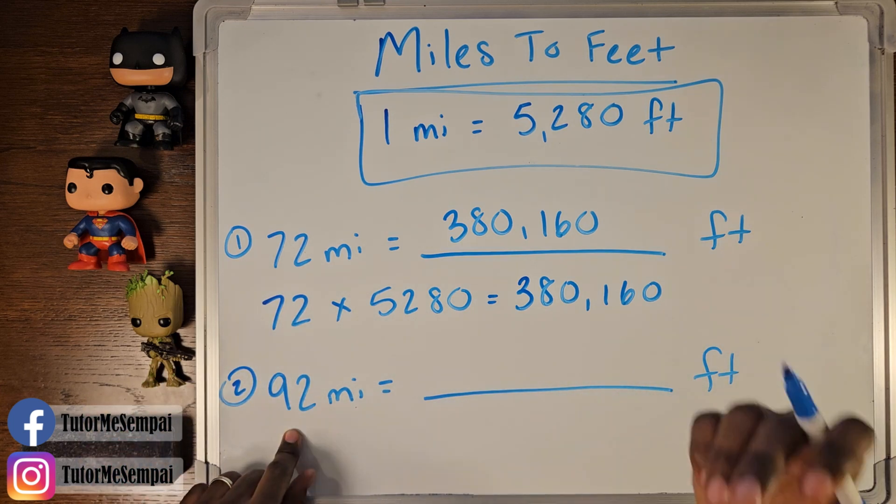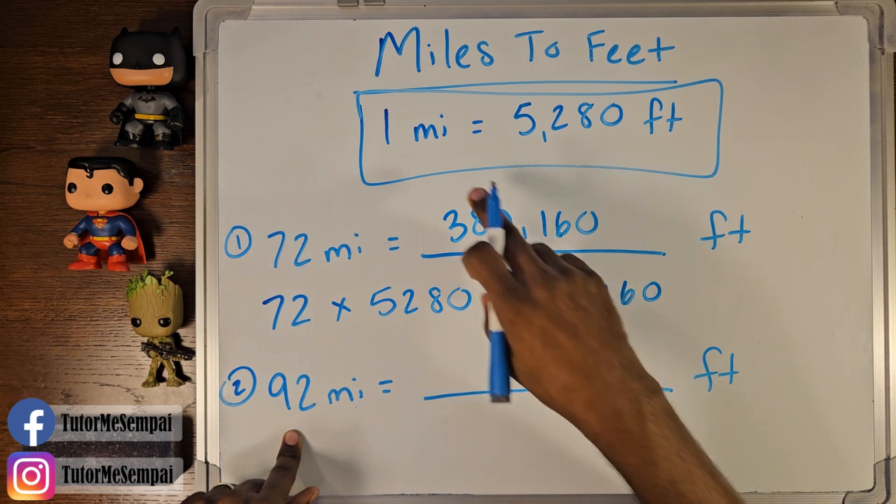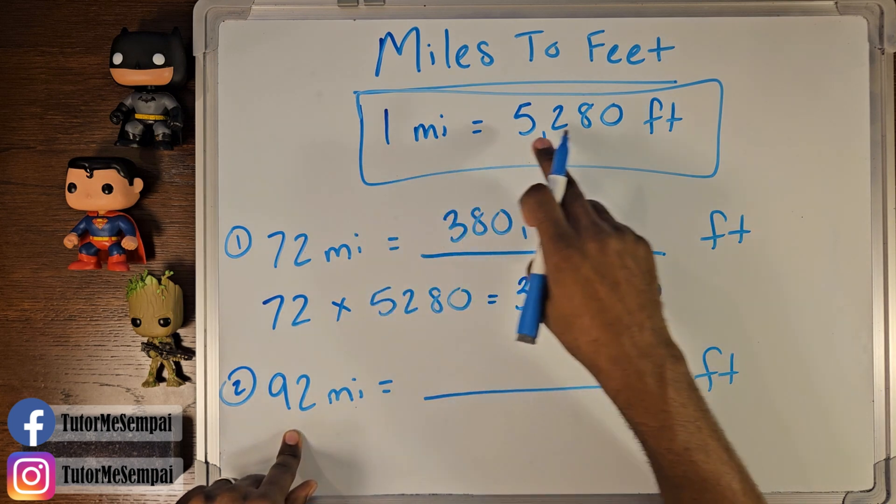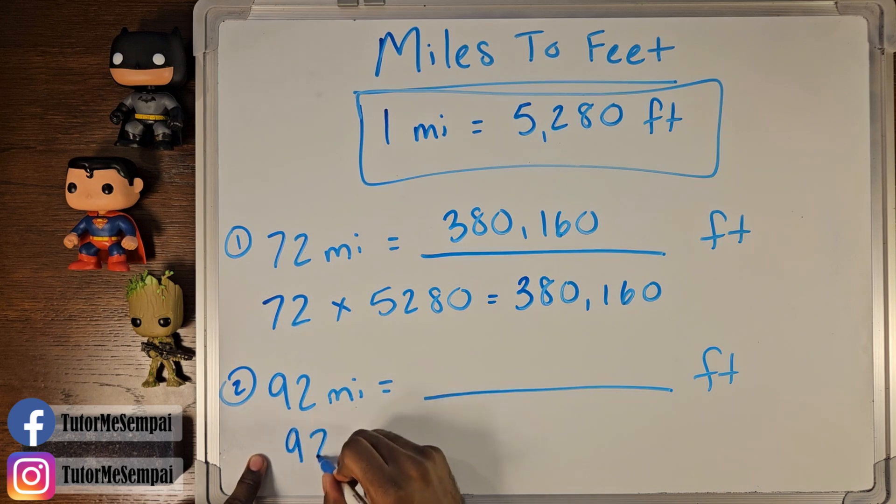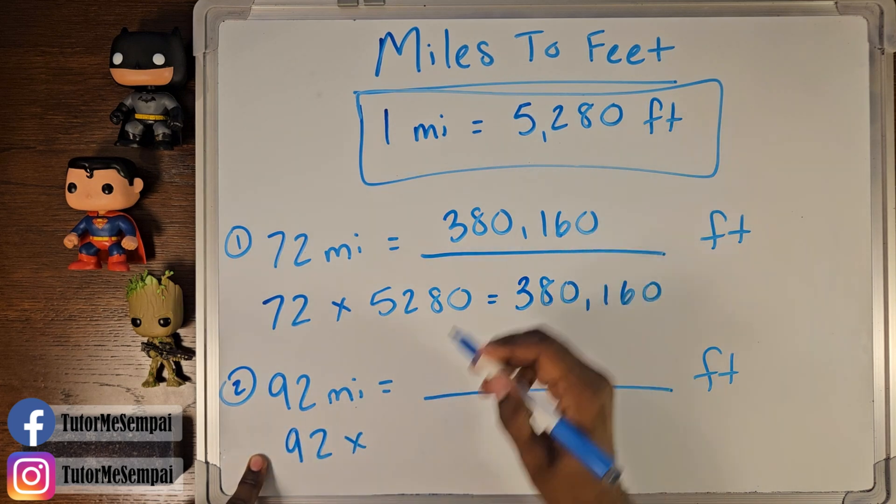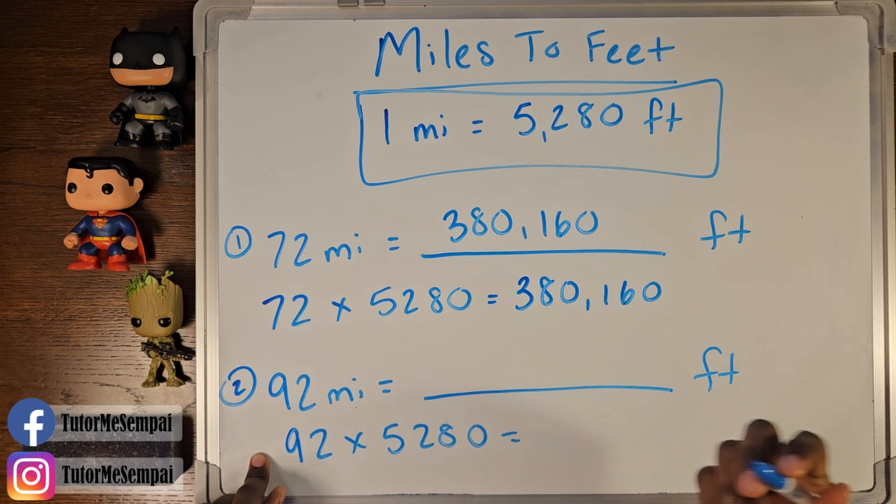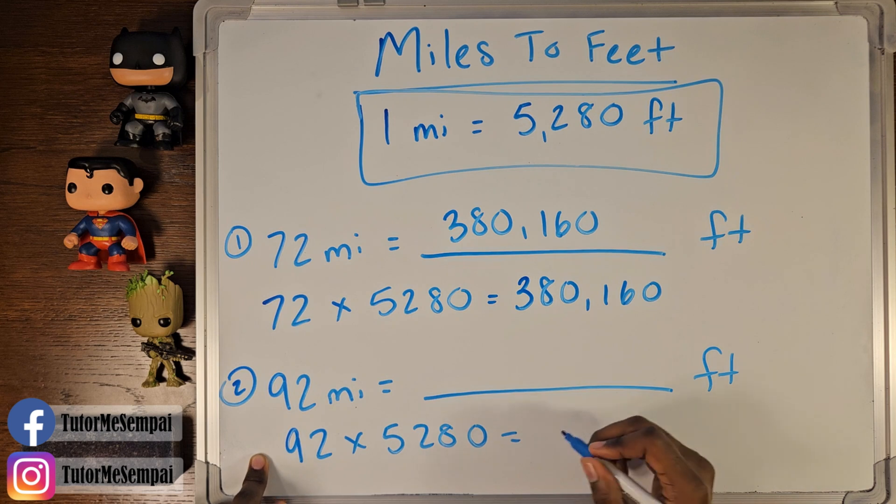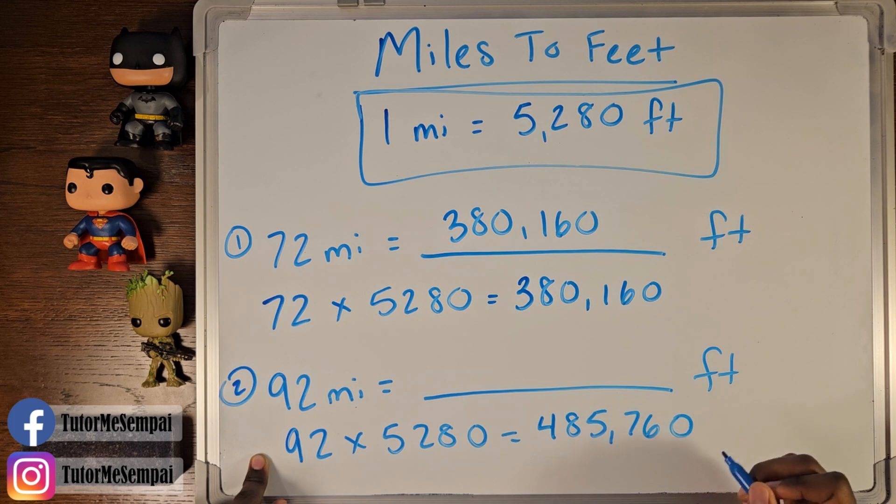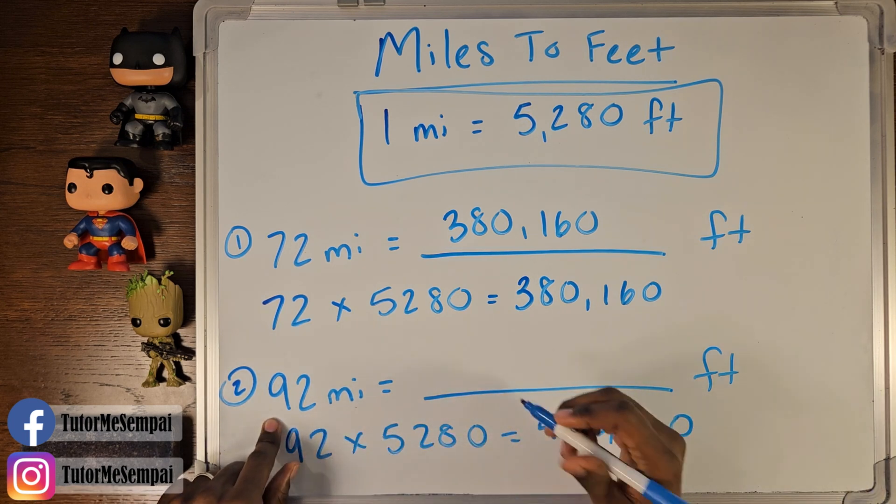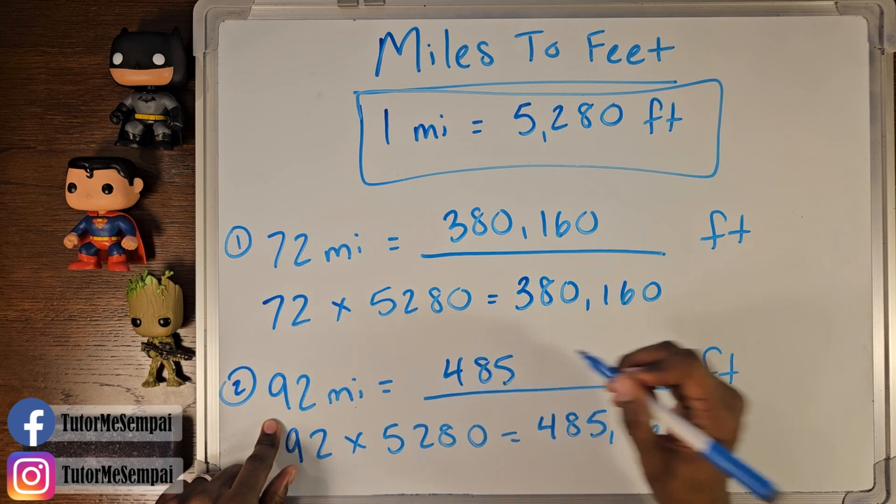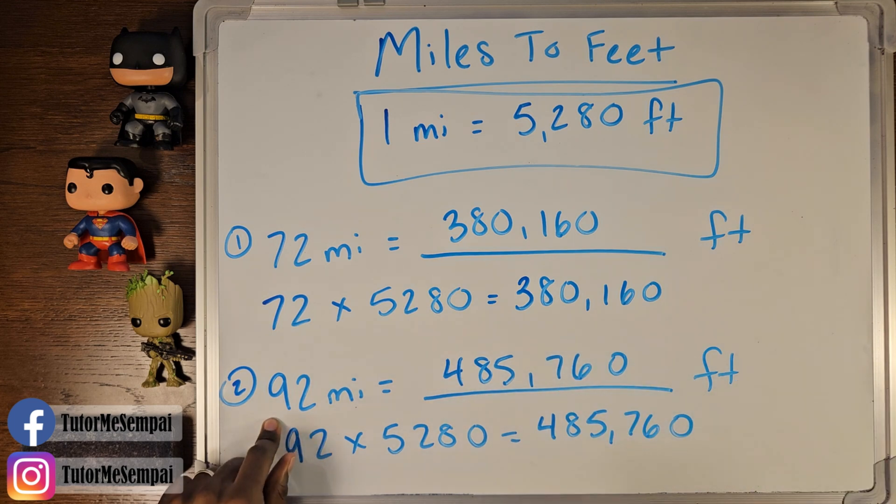Remember, when you're having your miles go to feet, you're looking at, well, each mile is going to be this amount. So let's multiply 92 times that 5,280. And when you do that, what do you get? You're going to have 485,760. That means that whenever we have 92 miles, we're going to have 485,760 feet.